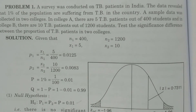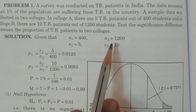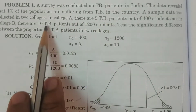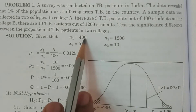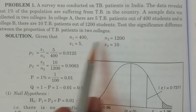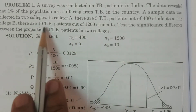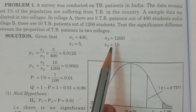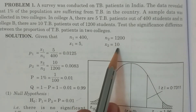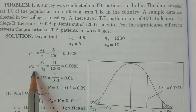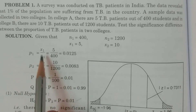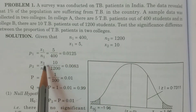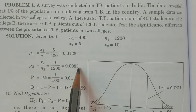Given values: N1 equals 400, X1 equals 5 — in College A, 5 TB patients out of 400 students. In College B, 10 TB patients out of 1200 students, so N2 equals 1200 and X2 equals 10. Calculate small p1 and small p2, the sample proportions: p1 equals X1 by N1 equals 5 by 400; p2 equals X2 by N2 equals 10 by 1200.